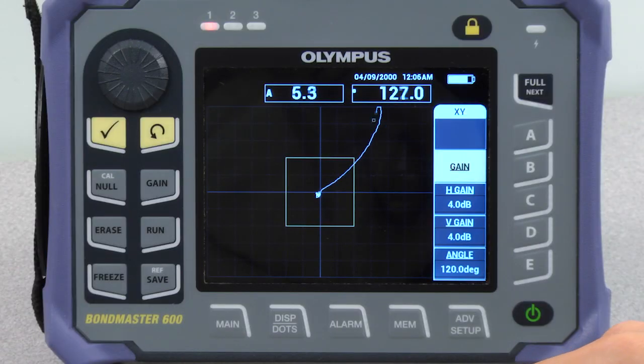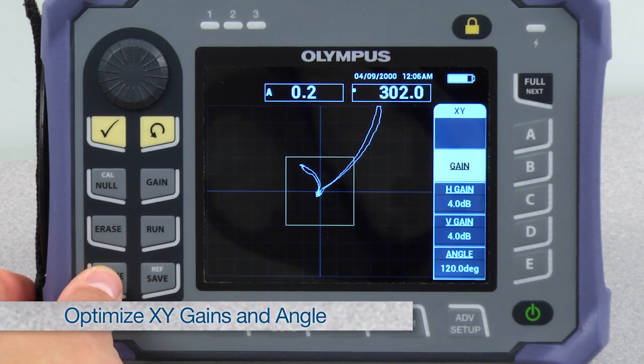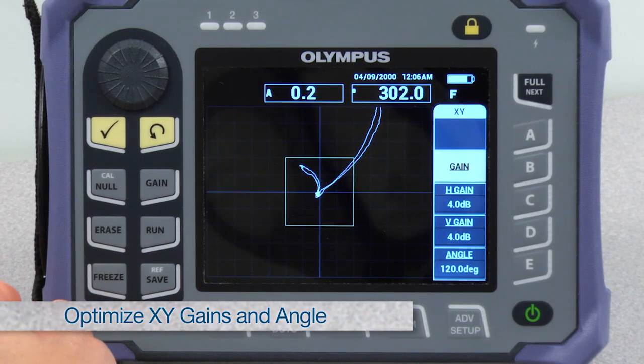If your reference standard has more than one disbond, scan all defects and optimize the XY gains and angle as needed.